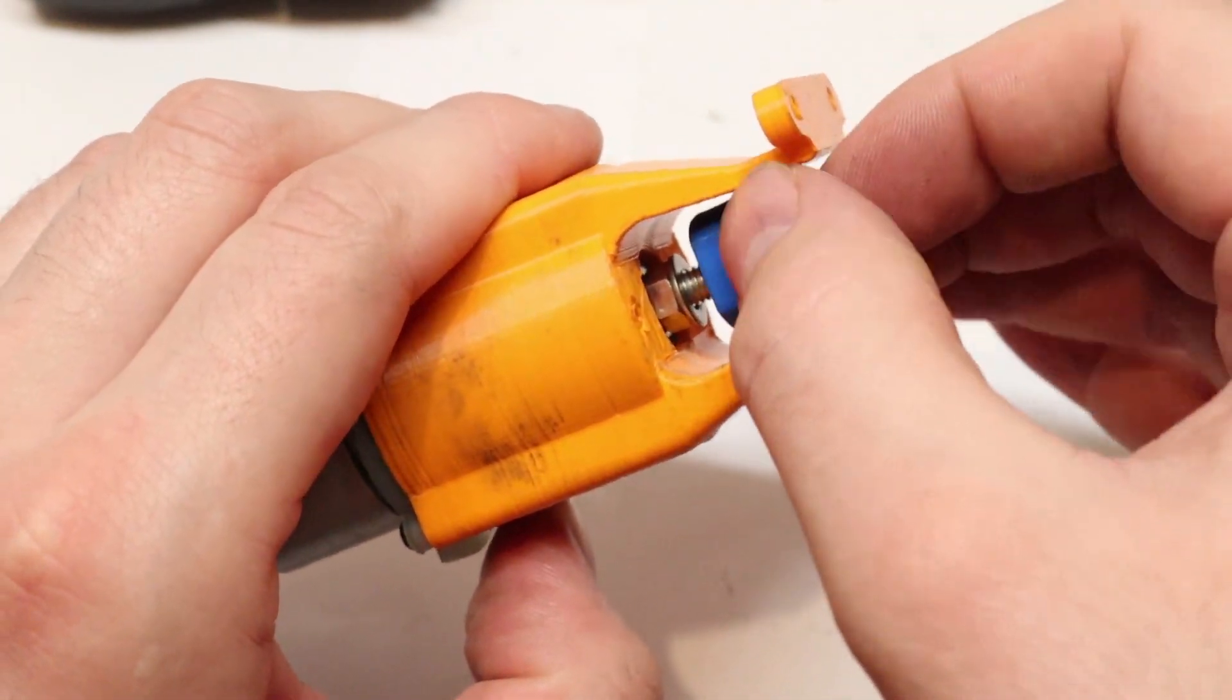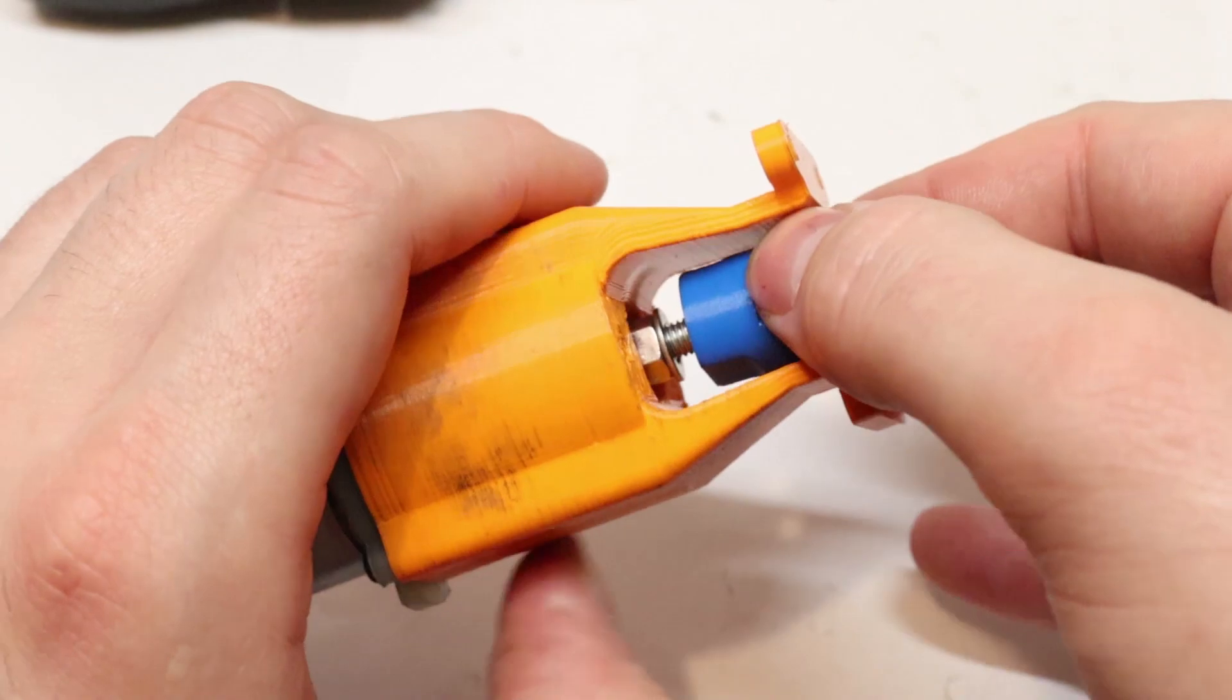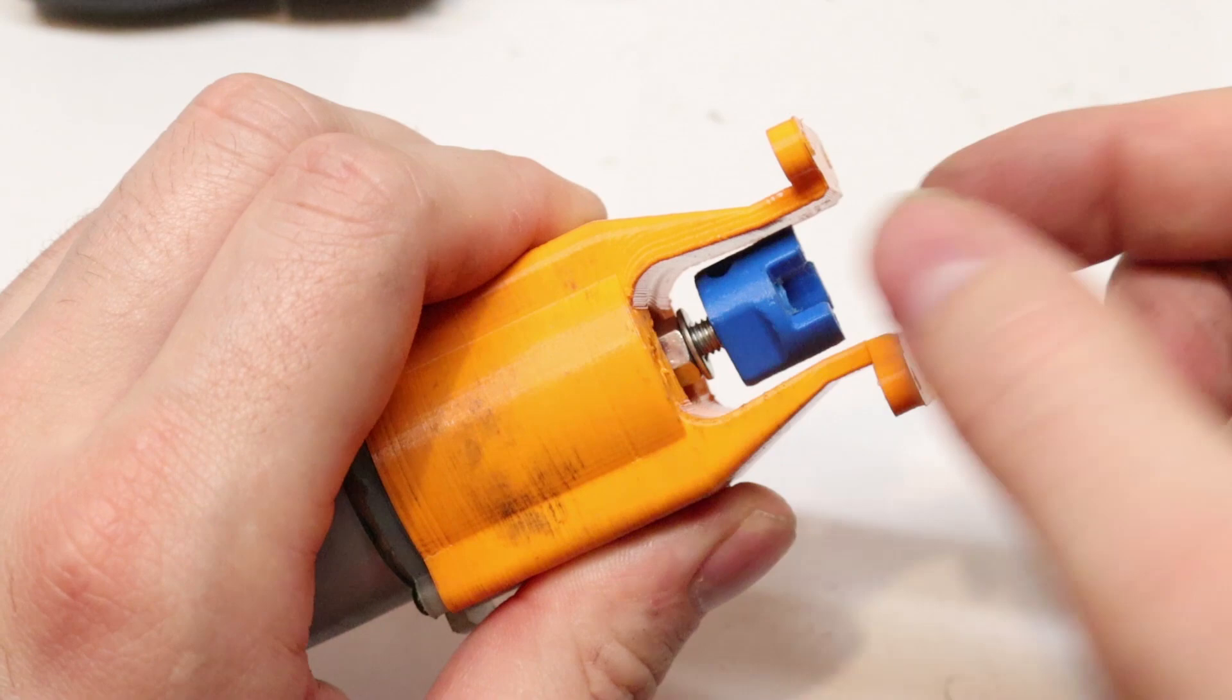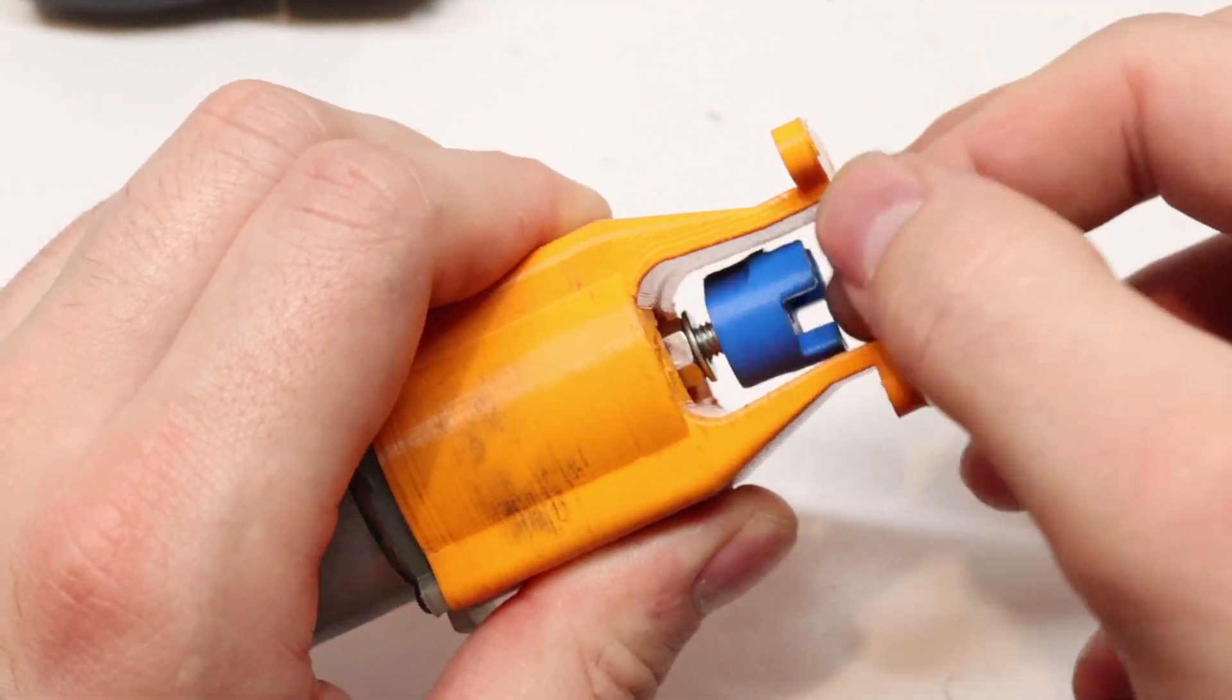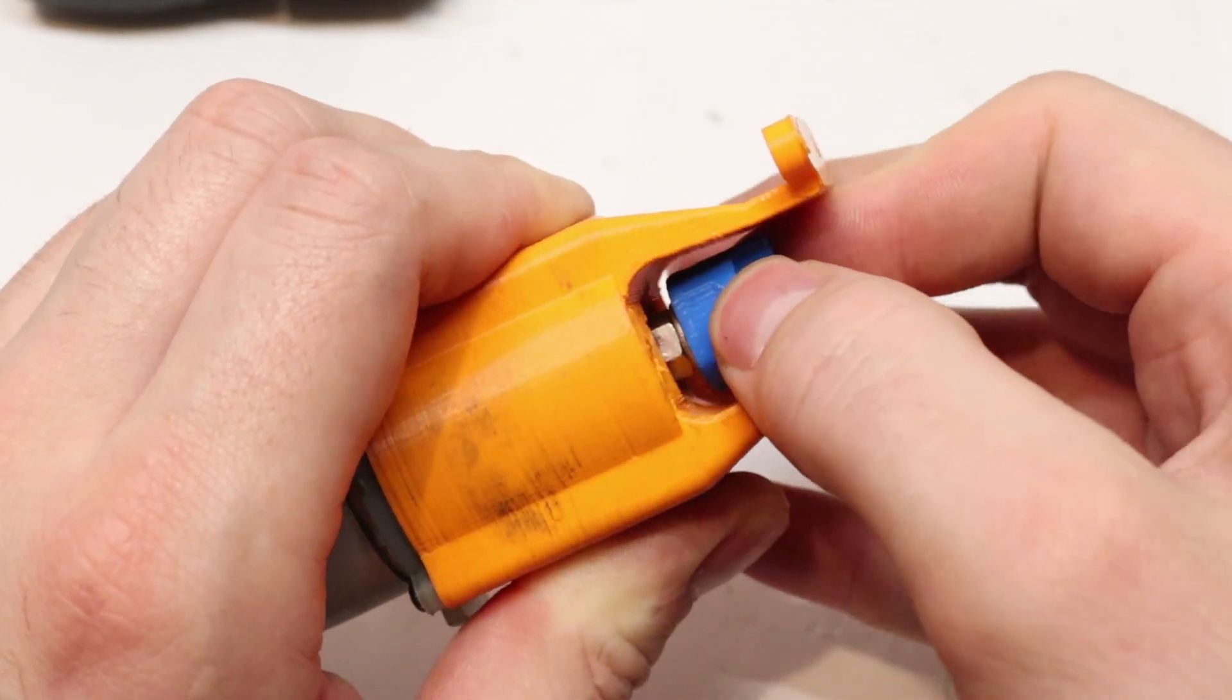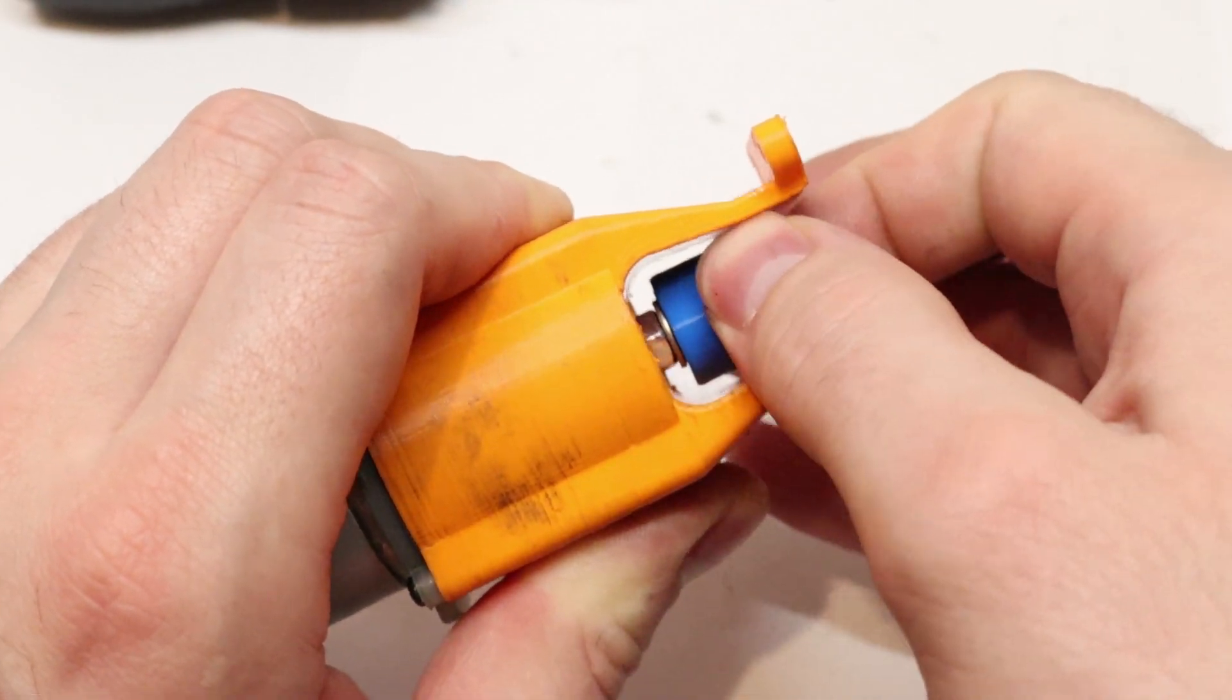You screw this on here. This can be quite finicky and I wish I would have designed this differently. What you can do is print a third one, stretch it, and use it as a wrench or key to tighten this.